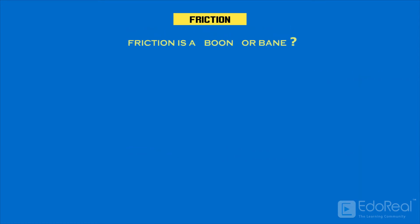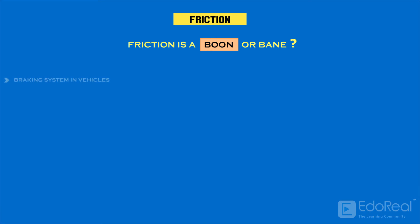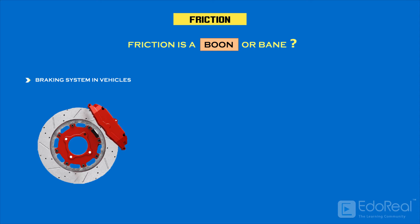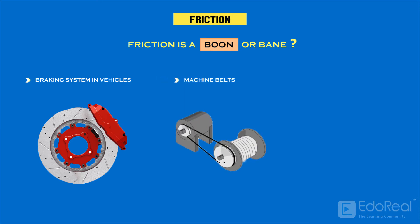We might get a doubt that friction is a boon or a bane. Well, it is very useful in so many situations, such as the braking system in vehicles. Here frictional force helps stop the vehicle. Machine belts run based on the frictional force — here friction holds the belt and pulley. And we cannot even walk without friction.